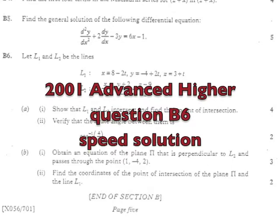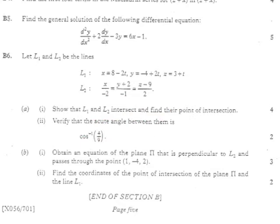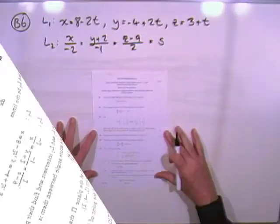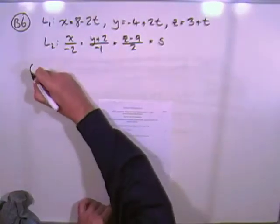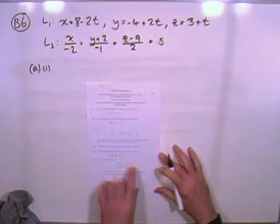Right, from the 2001 advanced type paper, there was question B6, and that second section used to be in those days. So for the first part, you're given the equations of two lines in different forms, parametric and standard, or symmetric, and you have to show that they intersect, and find the point of intersection.